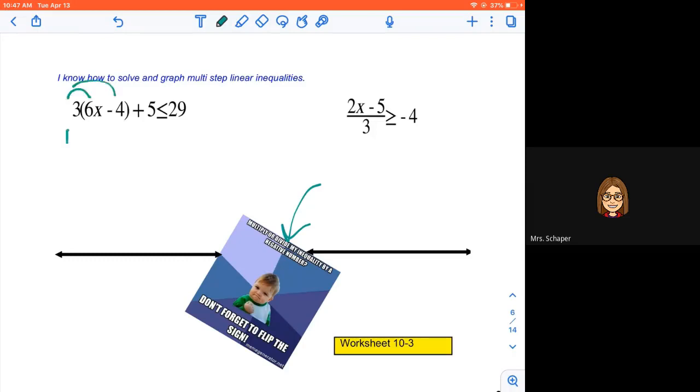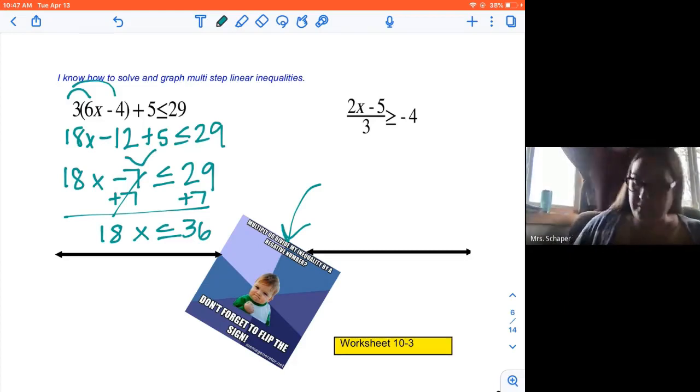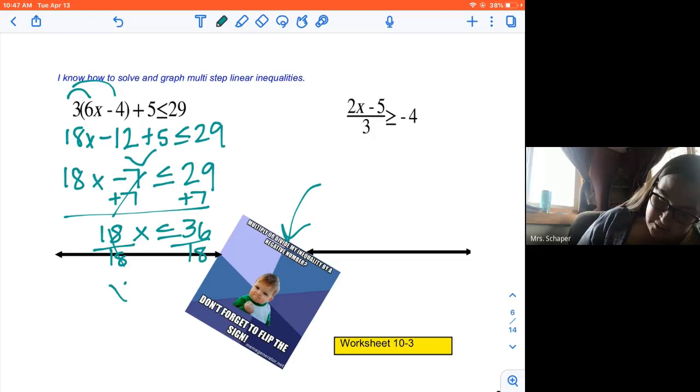3 times 6 is 18x. 3 times 4 is 12. All right. I want to combine these terms. So 18x - 7 ≤ 29. We can add 7 to both sides. So 18x ≤ 36. So again, I'm following those rules as if this was just an equation. The difference is, is if you multiply or divide by a negative number. So I'm going to divide both sides by 18. X is less than or equal to 2.